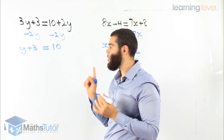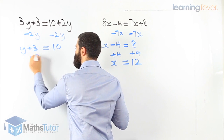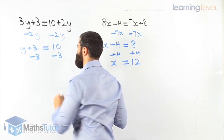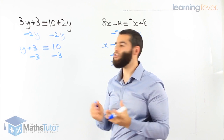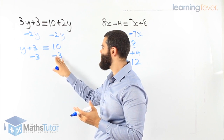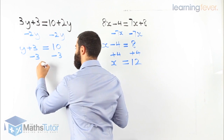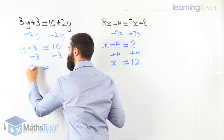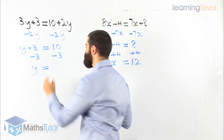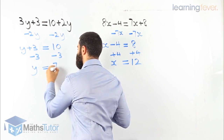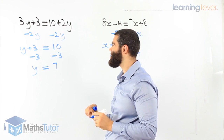We only want to work out y, so plus 3 becomes minus 3 from one side, minus 3 from the other side. Very important — we balance the equation. We do one thing on one side, we have to do the same thing on the other side. 3 minus 3 is gone, so we're left with y. 10 take away 3 is 7. y equals 7. That's our answer.